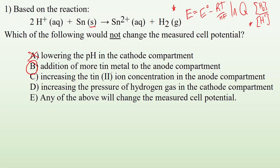I'll come back to that though. Increasing the Sn²⁺ ion concentration in the anode compartment — that's one of the products and it's aqueous, so it's part of the expression. This one will affect the cell voltage. Increasing the pressure of hydrogen gas in the cathode compartment — yes, we got H2 right there, so that's going to affect things. And option E, 'any of the above will change the measured cell potential' — no. So the answer is addition of tin metal to the anode.